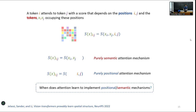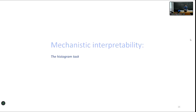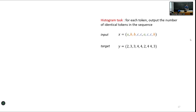We answer this question in two ways: an empirical study on a simple task, and a solvable model that's theoretically more controlled. For the empirical part, we use the histogram task: given an input sequence of fixed length from some alphabet like A, B, C, the task is to return a sequence where each letter is replaced by the number of times it occurs in the input. For example, if A occurs twice, it's replaced by 2; B by 3; C by 4; and so on.